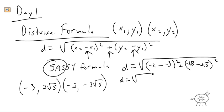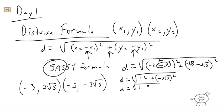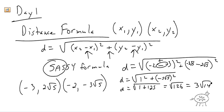That gives you d equals the square root of 1 squared plus negative 5 root 5 squared. Now 5 root 5 squared is 5 squared times root 5 squared, which is 25 times 5, equals 125. So d equals the square root of 1 plus 125, which is the square root of 126. And since 9 goes into that evenly, it simplifies to 3 root 14. Always simplify completely — if you don't, you'll lose a point.